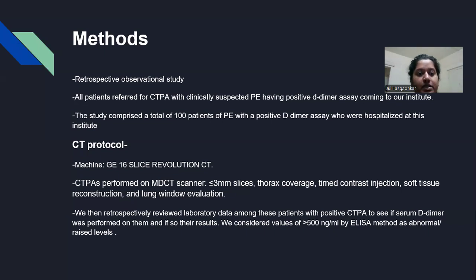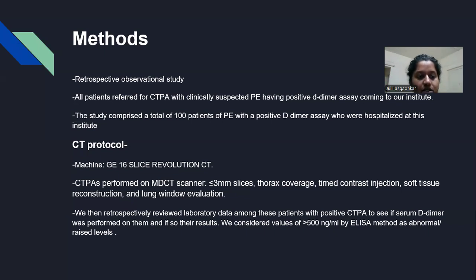This was a retrospective observational study. All patients referred for CTPA with clinically suspected PE and a positive D-dimer assay were included. The study comprised 100 patients with positive D-dimer assay who were hospitalized at this institute. The machine used was a GE 16-slice Revolution CT. CTPAs were performed with less than 3 mm slices covering the entire thorax, with timed contrast injection, soft tissue and mediastinal reconstruction, and lung window evaluation.